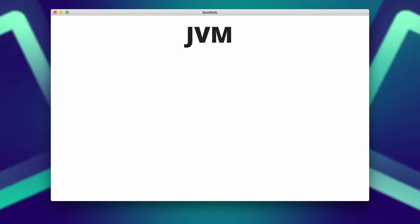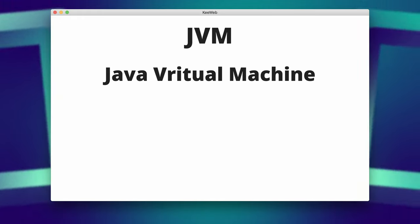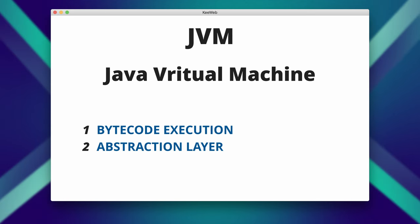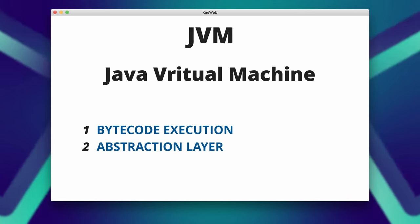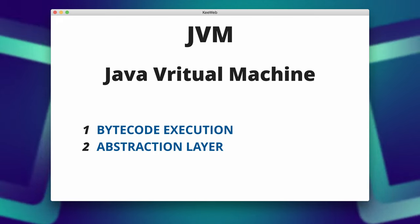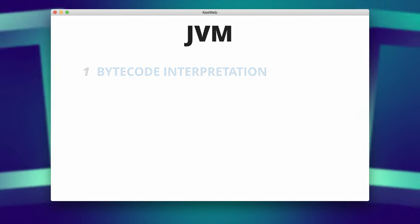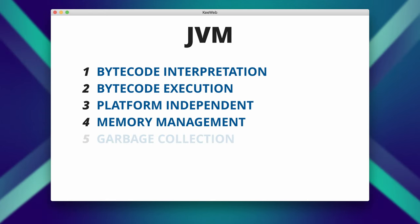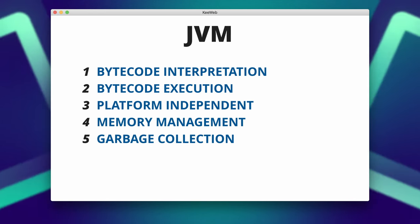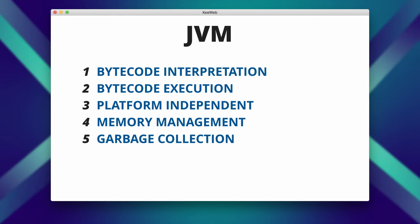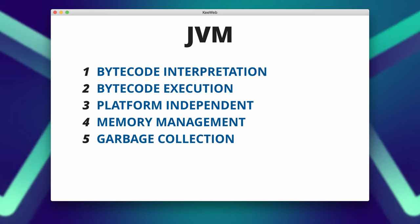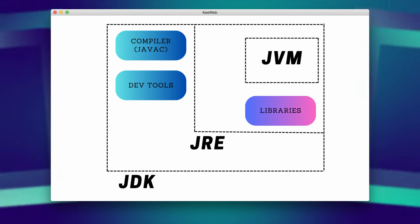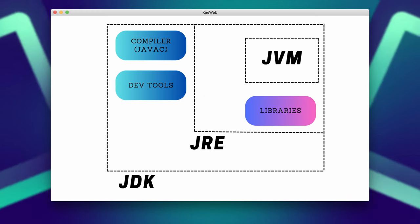JVM is the Java Virtual Machine. It is the runtime environment in which Java bytecode is executed. It provides an abstraction layer between the Java code and the underlying hardware and operating system. The JVM interprets and executes the Java bytecode, allowing Java applications to be platform independent. It handles tasks such as memory management, garbage collection, and bytecode interpretation. The JVM is part of both the JDK and the JRE.